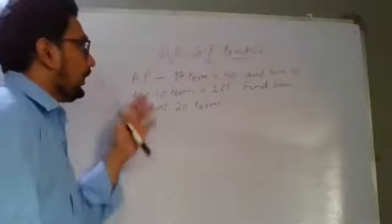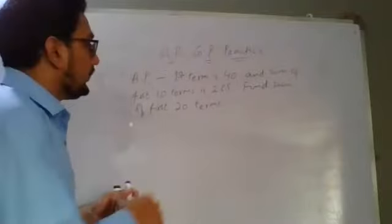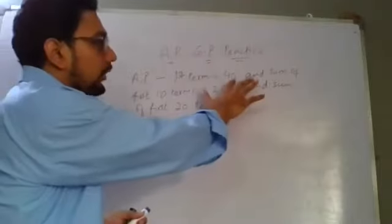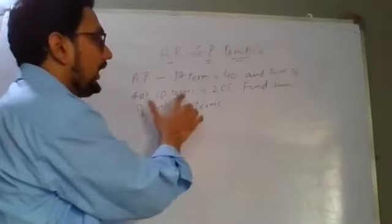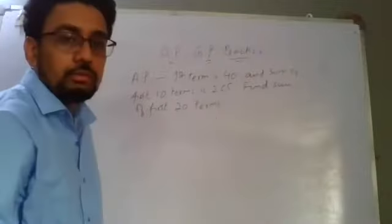Okay, so in today's class we will be discussing AP and GP. I am looking at the first question that is a bit tricky. It says that in an AP, the first term is 40 and the sum of the first 10 terms is 265. You have to find the sum of the first 20 terms.